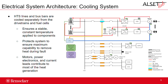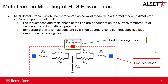Here we have our cooling system for Cheetah. We have a few different cooling loops: we are cooling the HTS lines and bus bars separately from the drivetrains and fuel cells. This configuration ensures a stable and constant temperature applied to the components and protects the system to ensure maximum capability to remove heat during a fault. The motors, power electronics, and current leads contribute to most of the heat generation, so this configuration makes sense.